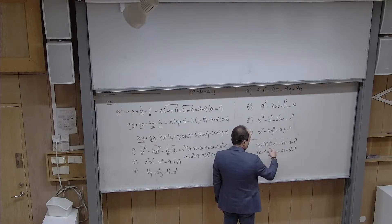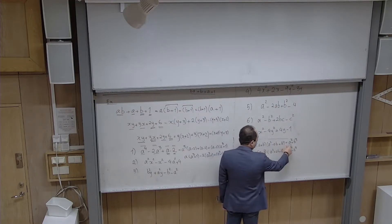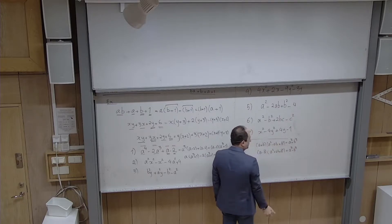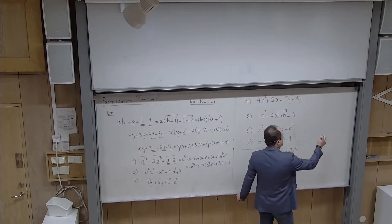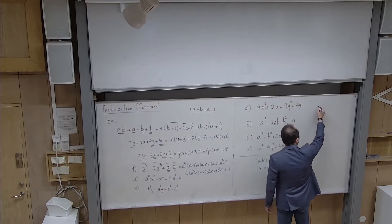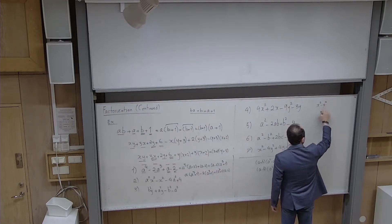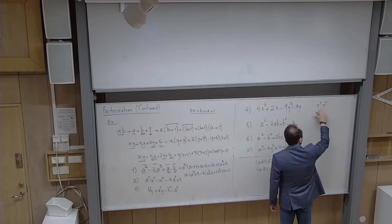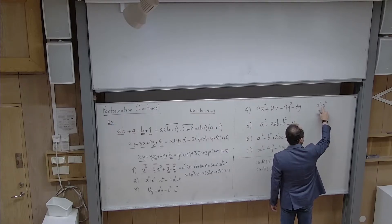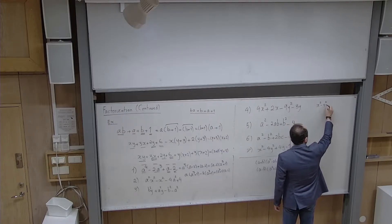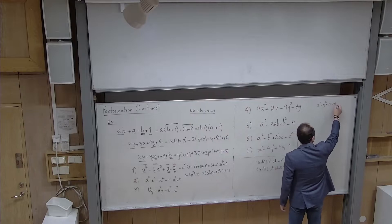From left to right we discussed these identities a few sessions ago, and from right to left is factorization. The conjugate identity is always useful for the difference of two complete squares. If you have the sum of two squares, leave it — not factorizable over real numbers.